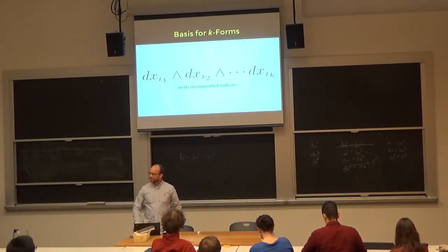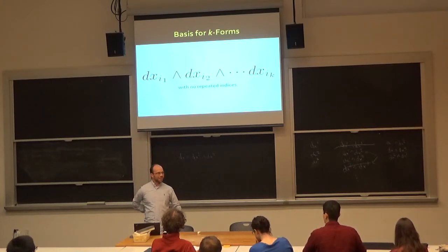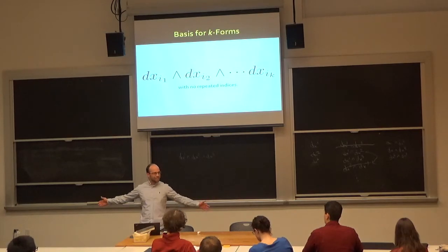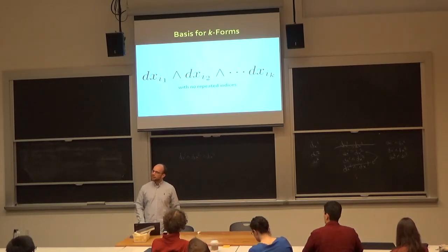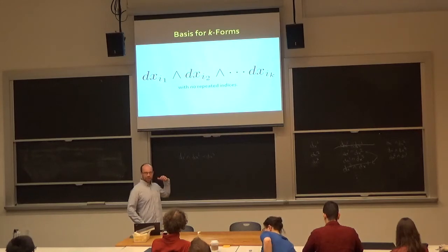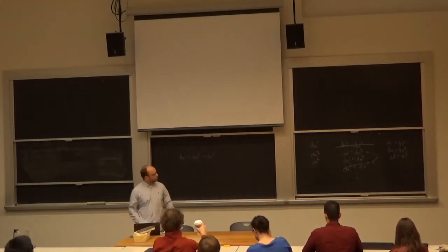That's the wedge product — a generalization of the cross product. This also answers why cross products only work in 3D. In linear algebra, dot products lift naturally to any dimension, but when you ask about cross products, you have to understand k-forms first. Different dimensionalities yield very different notions of cross products.